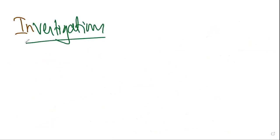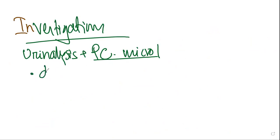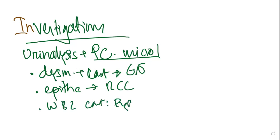Moving to investigations: first, do urinalysis with phase contrast microscopy to look for dysmorphic RBCs. If there are dysmorphic RBCs and RBC casts, this suggests glomerulonephritis. WBC casts suggest pyelonephritis or infection. Also perform renal function tests. For general investigations, do CBC with ESR — anemia might suggest RCC, and high ESR might suggest TB, RCC, or UTI.